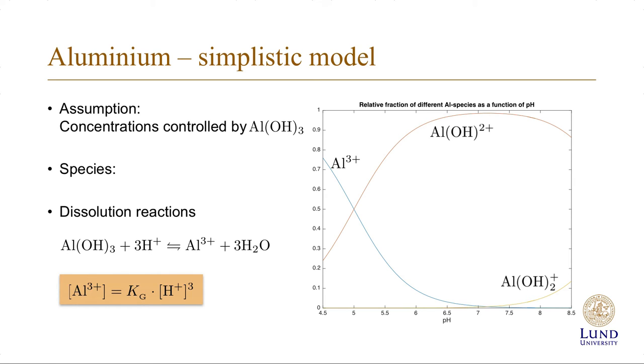And if we look at the dissolution reaction, we see that we have a solid as a reactant, and we have water as a product. And Al3 plus can be expressed as Al3 plus equals Kg times H plus cubed, where G stands for Gibbsite, which is a common name for Al(OH)3.